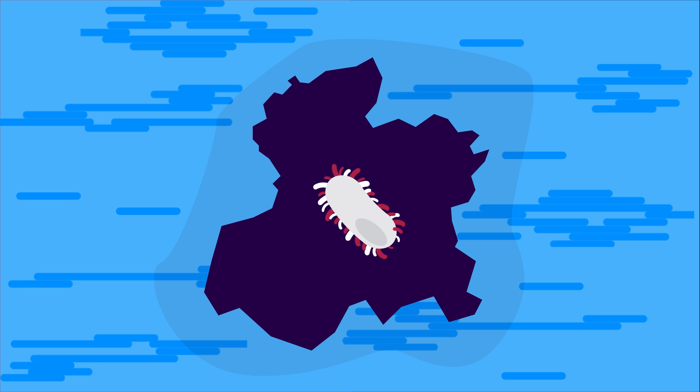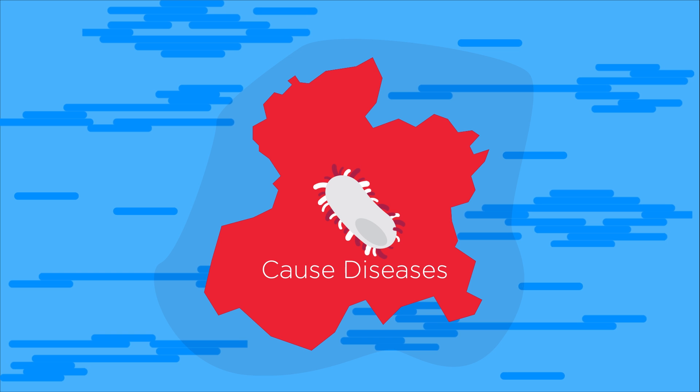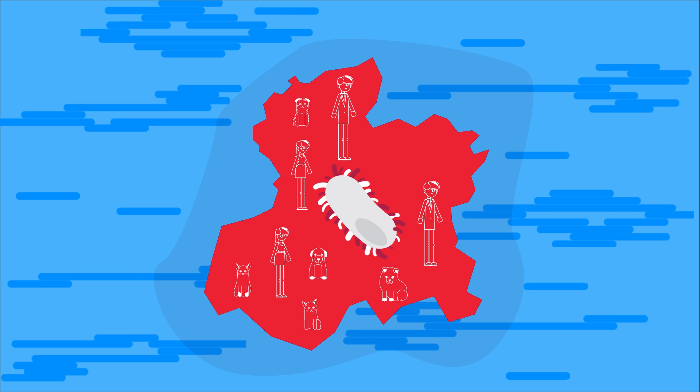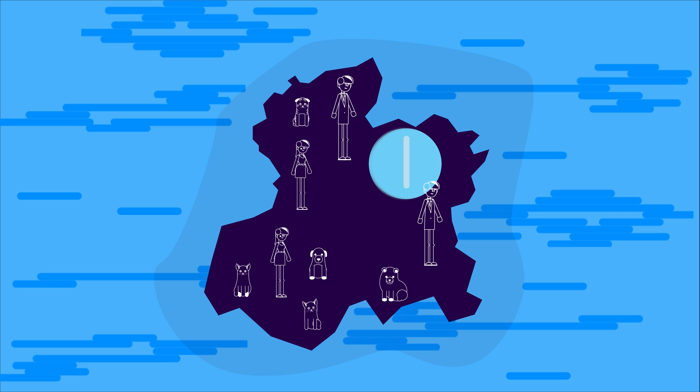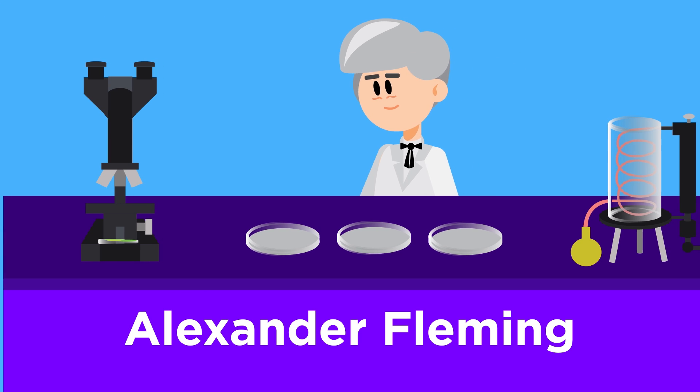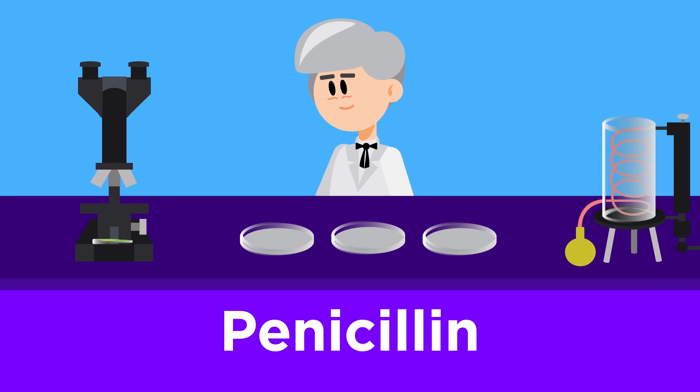Bacteria are single-celled organisms which can be pathogenic. That means they can cause disease in humans and animals, and antibiotics can be used to treat these diseases. In 1928, Alexander Fleming discovered the very first antibiotic, penicillin.